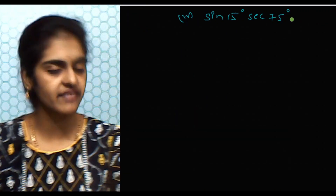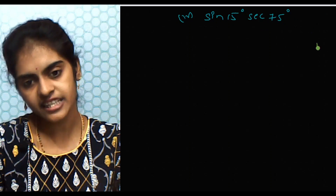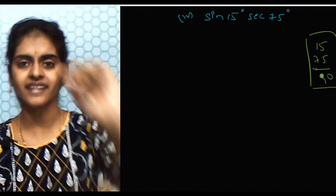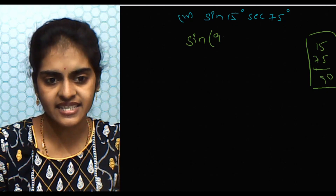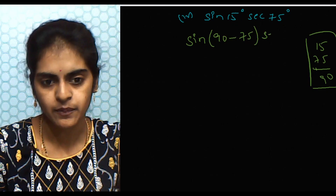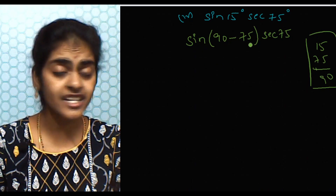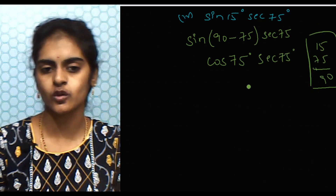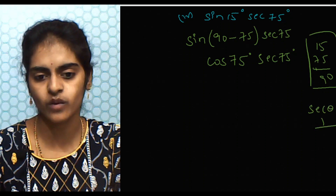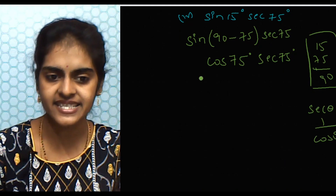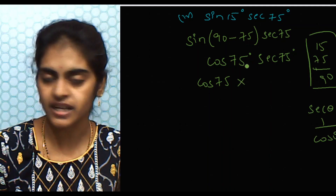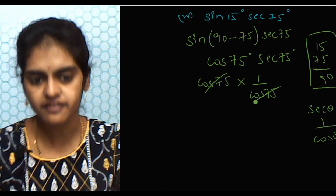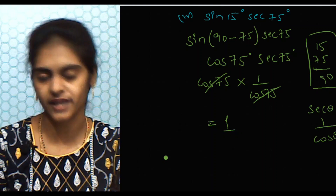Next: sin 15° × sec 75°. Check: 15° + 75° = 90°. Write sin 15° as sin(90° − 75°). Since sin(90° − θ) = cos θ, this becomes cos 75° × sec 75°. We know sec θ = 1/cos θ, so sec 75° = 1/cos 75°. Therefore cos 75° × (1/cos 75°) = 1. The answer is 1.